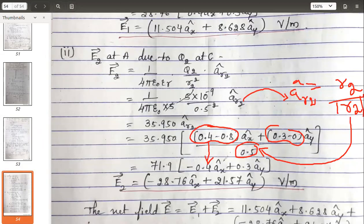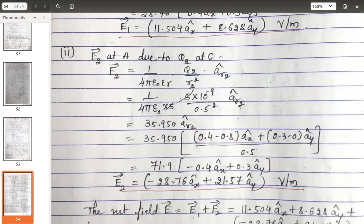Simplify it further, you will get negative coefficient of x and 0.3ây. What I have done here for simplification: I have taken this division here. If you divide it, you will get 71.9 in the bracket with x and y coefficients. Further is simplification. Multiply these two values. Similarly, multiply these two values. You will get x and y coefficients in volts per meter.